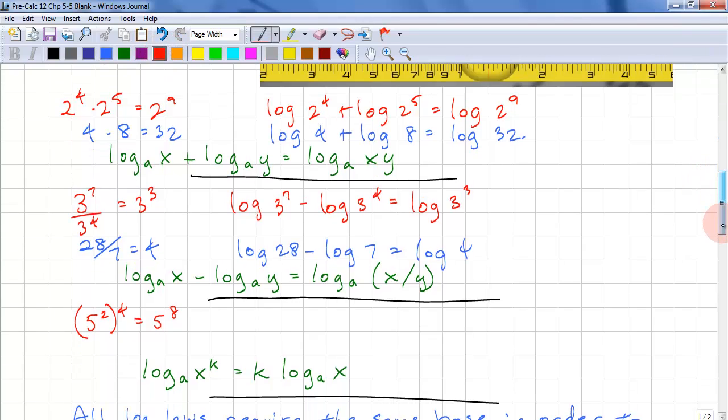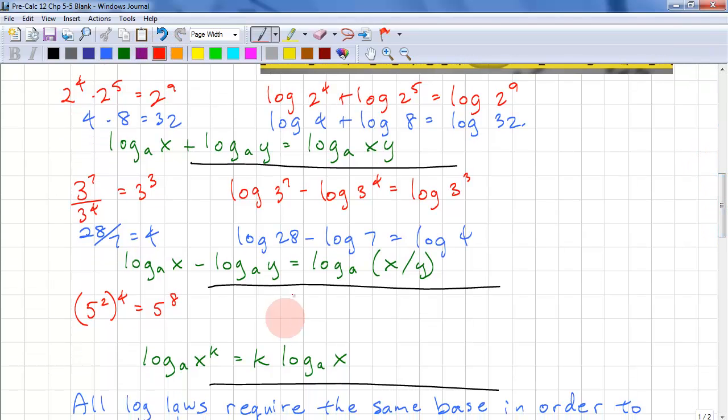On this last example, this is where people generally forget. We have log 5 to the power of 2 all to the power of 4. So this is log 5 to the power of 8. When we have a power of a power, we multiply the exponents. And this is 8 log 5. Let's do one more example. Log 6 to the power of 3 equals 3 log 6.